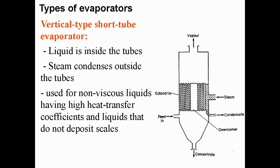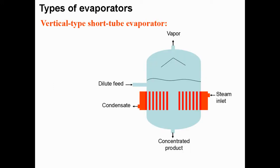The horizontal tube evaporator has poor liquid circulation and is therefore unsuitable for viscous liquids. Another type is the vertical type short tube evaporator, where liquid is inside the tube and steam condenses outside. It is used for non-viscous liquids having high heat transfer coefficient and liquids that don't deposit scales. The general idea of all evaporators: you have dilute feed coming in and steam entering the evaporator to evaporate part of the liquid — pure water becomes vapor — and the concentrated product will have a higher solute concentration.